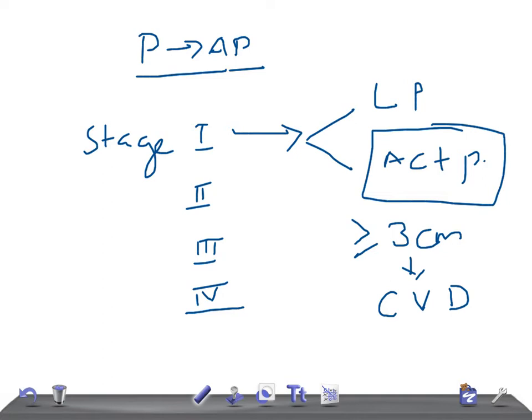The rate of dilation is at least 1.2 centimeters per hour in a primipara and 1.5 centimeters per hour in a multipara. If any abnormality is detected in the active phase, it is known as a prolonged active phase or arrested active phase.